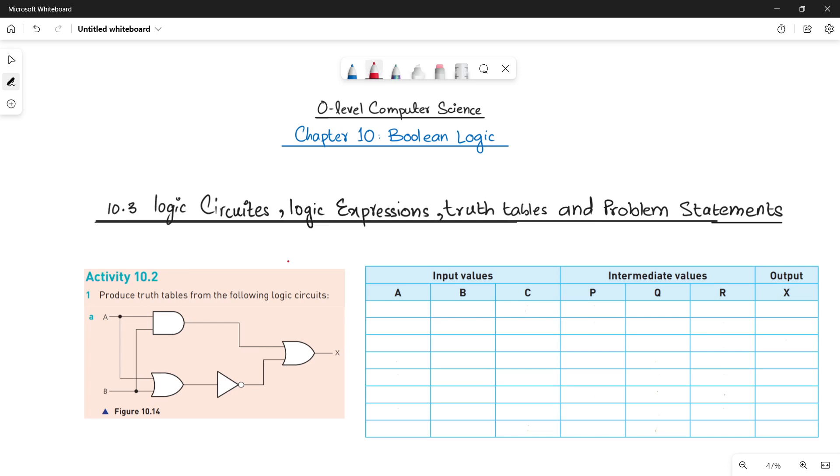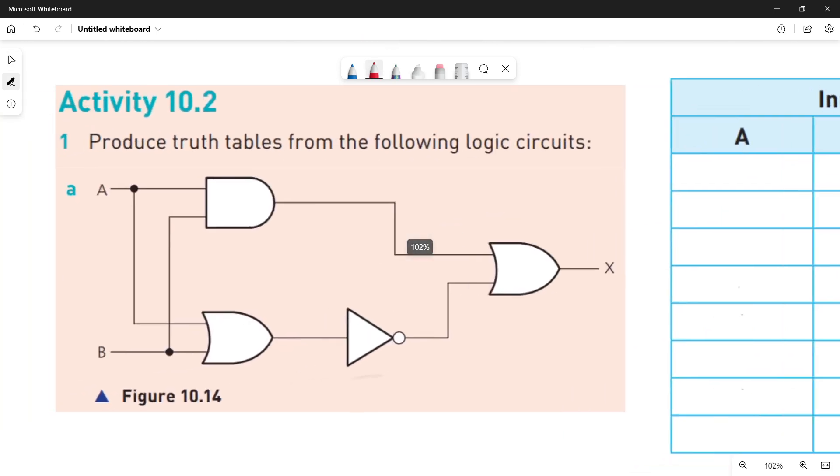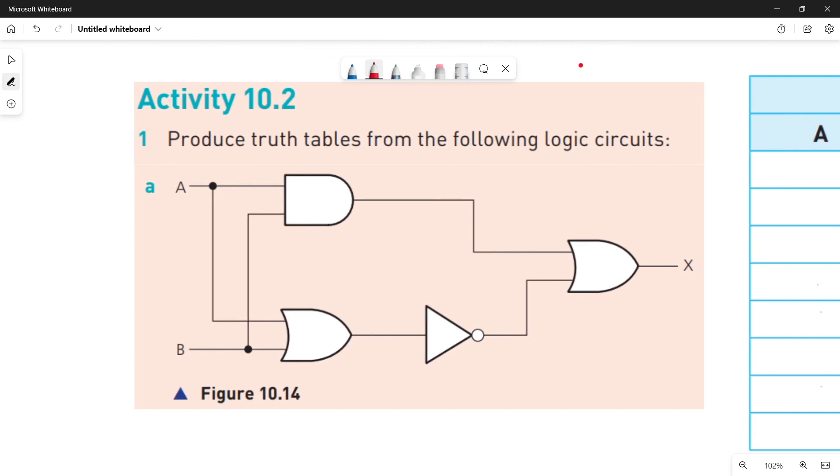Look at the circuit first. In the circuit you have given three, four logic gates. Let's quickly see what are these gates. The first one is your AND gate, and this one is your OR gate. This is your NOT gate and the final one is another OR gate.